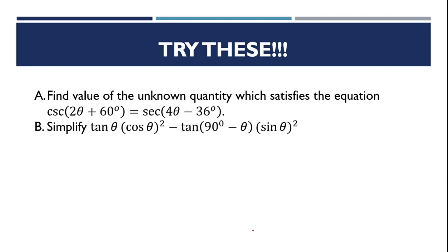Try these at home: find the value of the unknown quantity that satisfies cosecant of 2 theta plus 60 degrees equals secant of 4 theta minus 36 degrees. And simplify: tangent theta times cosine theta, quantity squared, minus tangent of 90 degrees minus theta times sine theta, quantity squared. Make sure to answer. I hope everyone enjoyed this discussion. God bless, and please subscribe and share if you found this helpful. Thank you so much and God bless everyone.